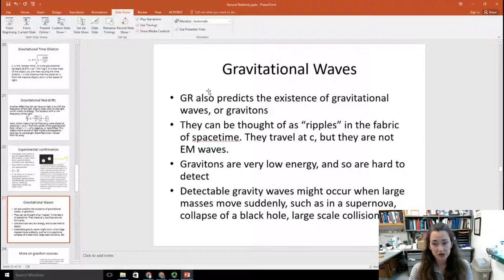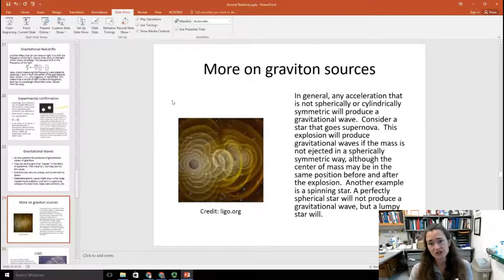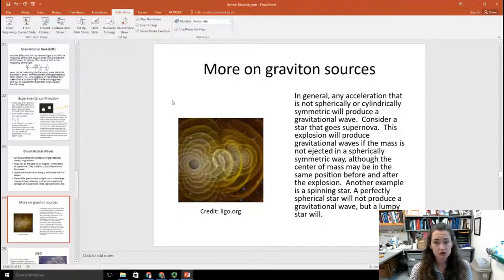But detectable gravity waves might occur when large masses move suddenly, like in a supernova, for example, collapse of a black hole, or large-scale collisions, like two black holes colliding, which is what happened in 2015, leading to the announcement of the discovery of the graviton in 2016. So, in general, any acceleration that's not spherically or cylindrically symmetric is going to produce a nice detectable gravitational wave. So if you think about a star going supernova, for example, that explosion will produce gravitational waves if the mass isn't ejected in a spherically symmetric way. Another example is a spinning star. A perfectly spherical star is not going to produce a gravitational wave, but if you have a lumpy star, or if you have a star in orbit about another star, then that causes asymmetries, and you might detect a gravity wave from that.